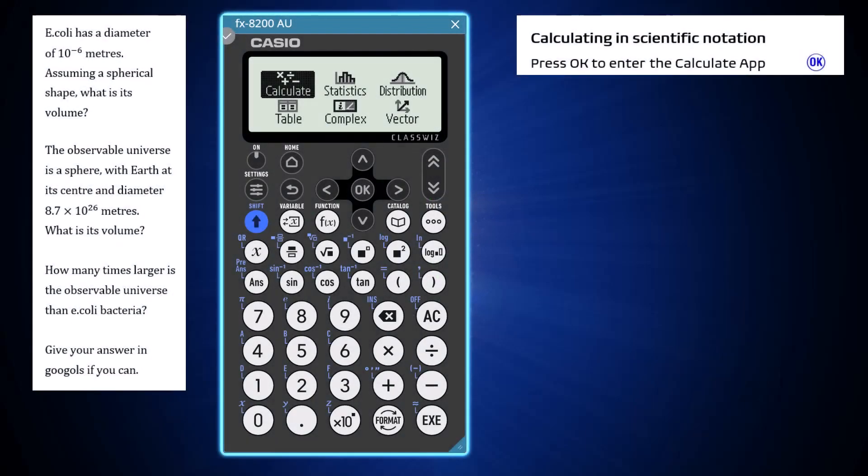The Calculate app of a Casio FX-8200AU, open from the home screen by pressing OK, can be used to perform calculations involving numbers in scientific notation.